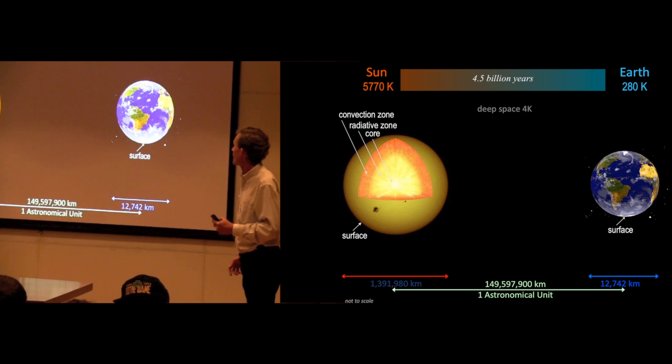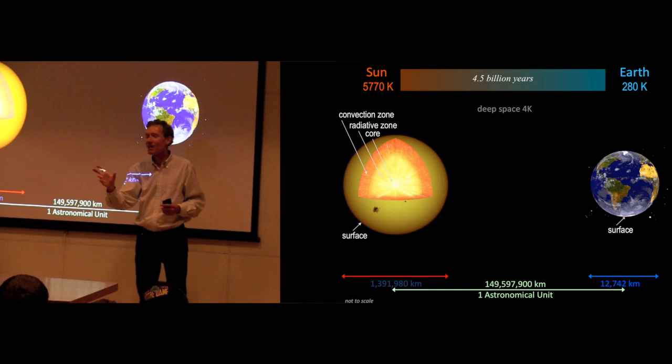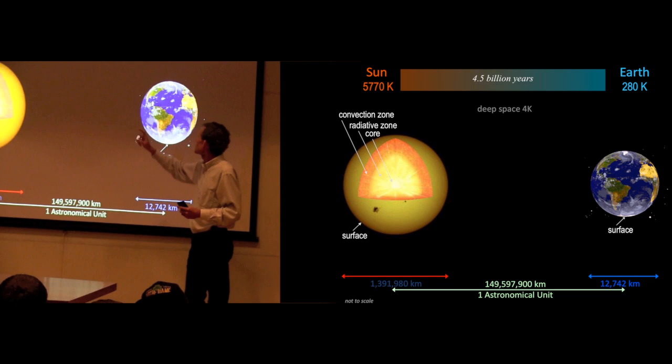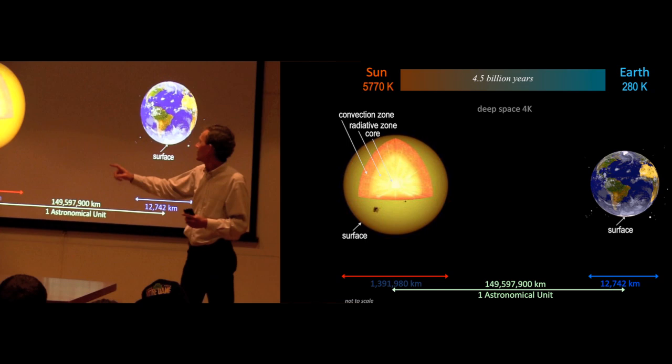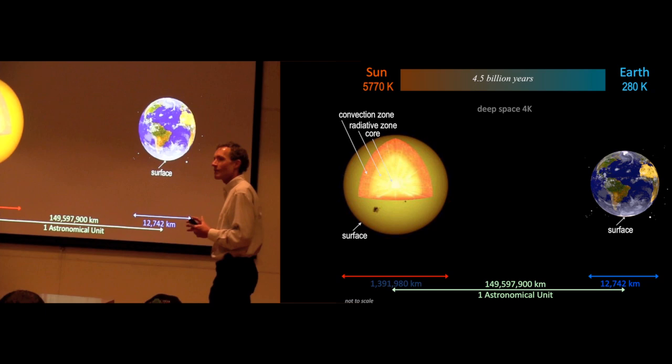That energy comes from the sun. These are not quite to scale. The sun is about a hundred times bigger in volume, a million times bigger in volume than the Earth. It's 150 million kilometers away. Light takes eight minutes to get from the surface of the sun to the Earth. The center of the sun is around 30 million degrees Fahrenheit, and the surface is a cool 10,000 degrees.